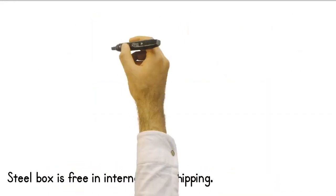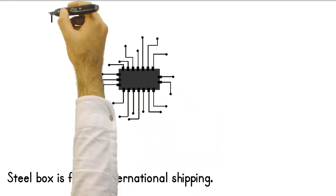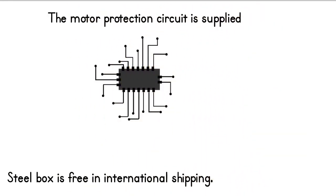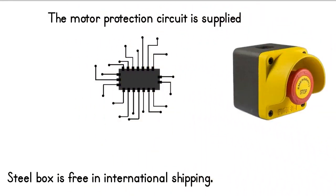Your machine should not be damaged during transportation. Steel box is free in international shipping. The motor protection circuit is supplied with the machine as standard. At the same time, the machine also has an emergency button for emergencies.